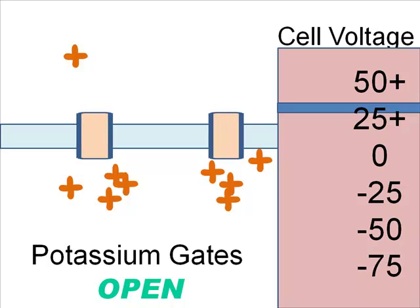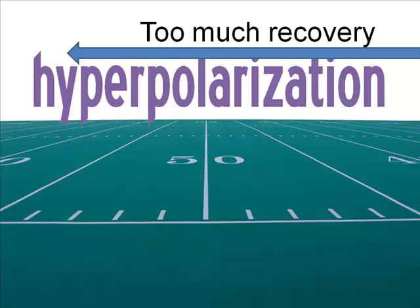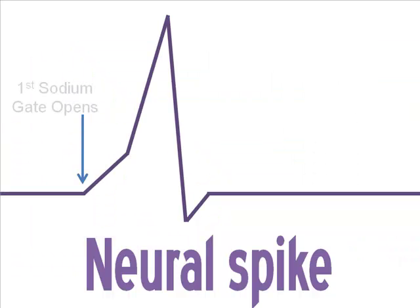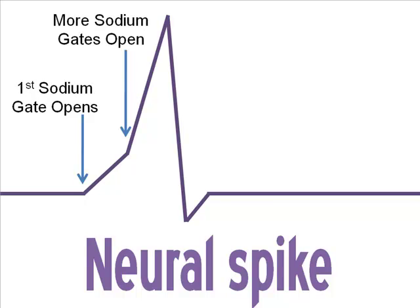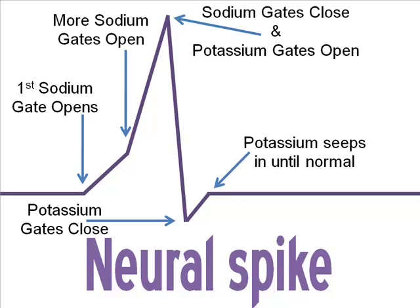When potassium ions rush out through their gates, the polarity has already changed from negative 70 millivolts to positive 30 millivolts. So the potassium exit actually reduces the positive charge inside the neuron. In fact, by the time the potassium channels have closed, so many potassium ions have left the interior of the cell that the neuron is even more negatively charged than before. This hyperpolarization doesn't last long. With all the gates closed, there's more potassium outside the cell than inside, but potassium is little, so some potassium leaks back into the cell until the voltage is back to negative 70 millivolts.